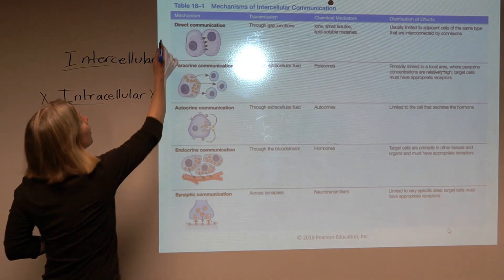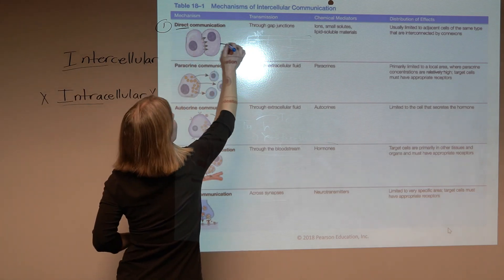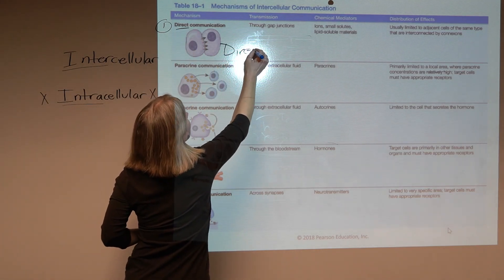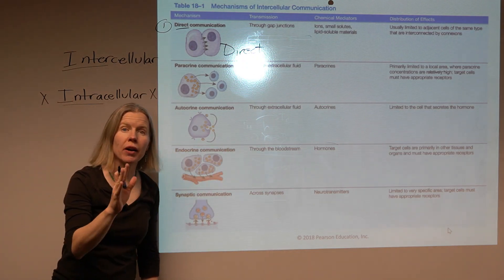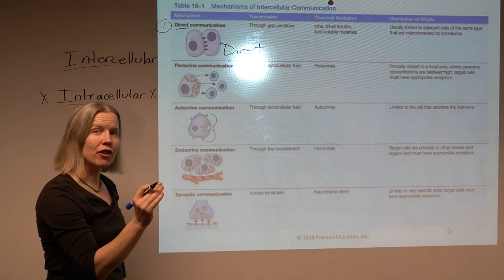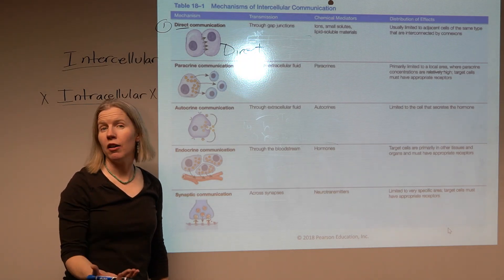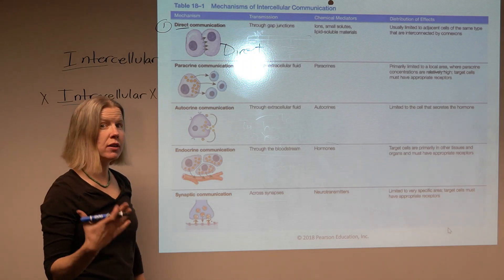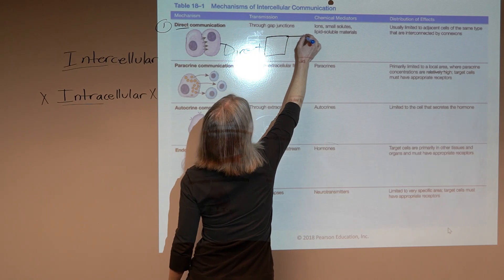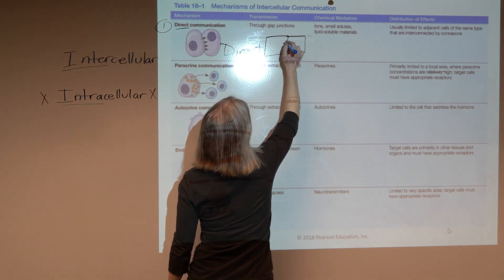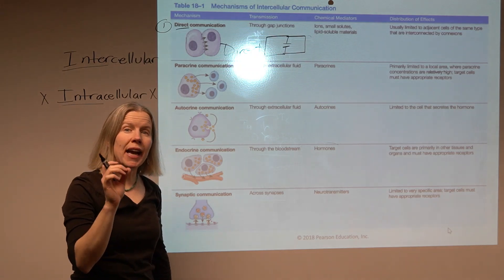So the first one that we see here is direct communication. So direct communication, what we're talking about here is cells actually having connections between them that allows essentially the free flow of ions and other small substances. And this is through, if you think back, I think it was chapter three, through what are called gap junctions. Remember those? It's like a little pore between these cells.